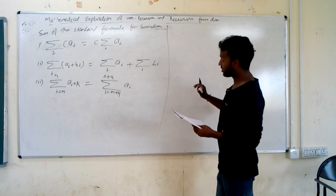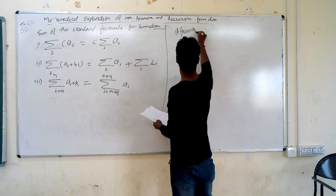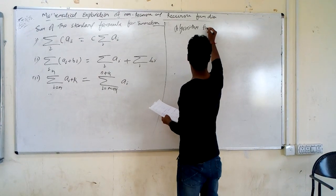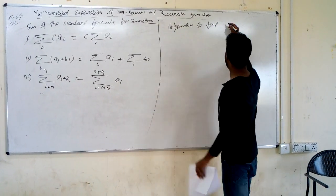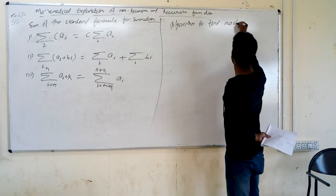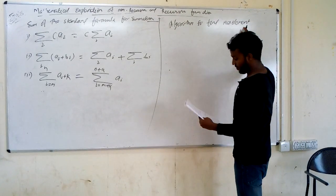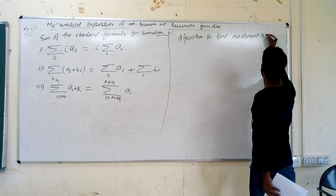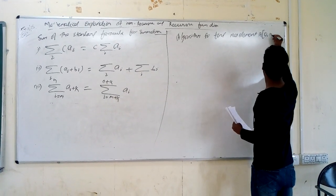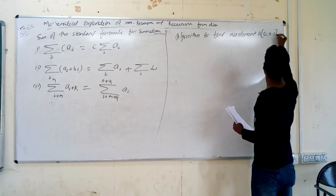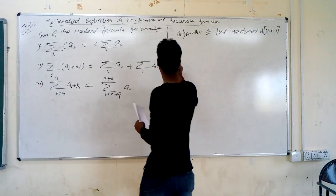This algorithm is to find the maximum element in an array A of size N squared — that is, array A from 0 to N minus 1, with the size of the array being N.